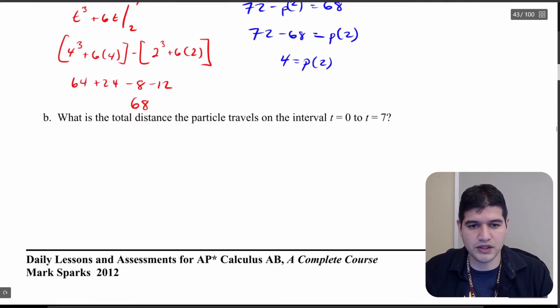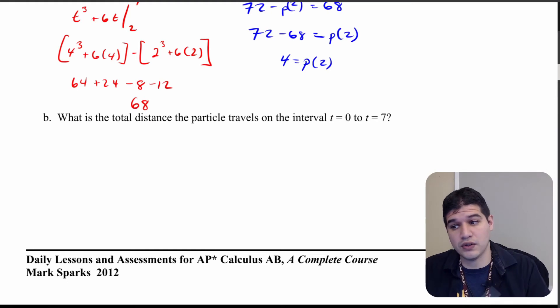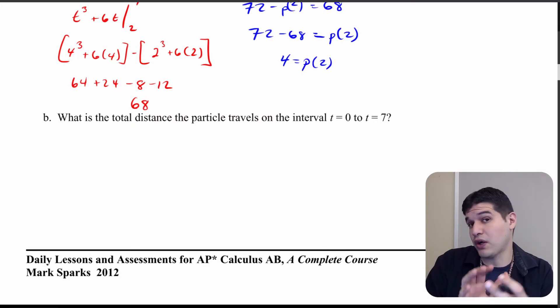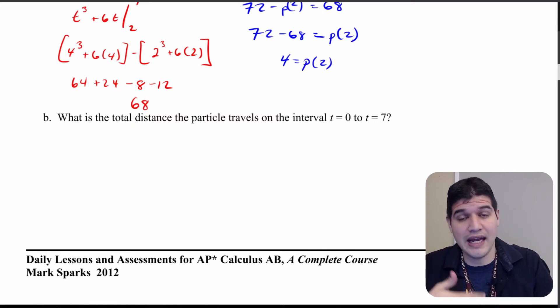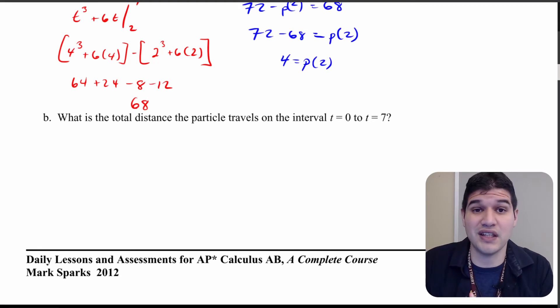All right let's move on here to part b. What is the total distance the particle travels on the interval from 0 to 7? So I'm going to have to find the total distance and I'm going to have to take into account any time that this particle is moving to the left and to the right and adding in all that distance. Remember when we change directions that means velocity is equal to 0.